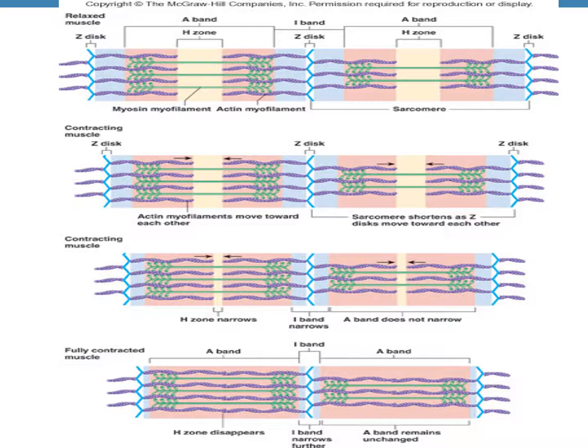Moving on to the second panel from the top, the muscle starts contracting. The actin filaments start sliding over the myosin — you can see the direction of the black arrows, so the purple filaments are now moving towards each other. As they move towards each other, the H zone or H band is decreasing in width, and the turquoise blue Z lines are being drawn towards each other. Moving to the third figure from the top, the H zone has become even narrower, the Z lines are closer, and the muscle is still contracting.